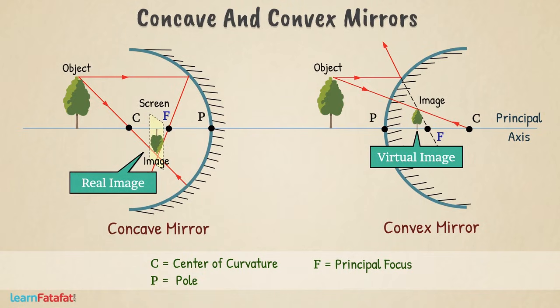If the image is right way up, that is in the same direction as that of the object, then it is called erect image. But if the image is upside down with respect to the object, then it is inverted image.